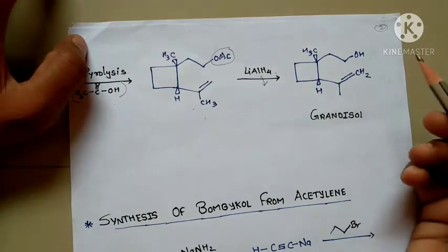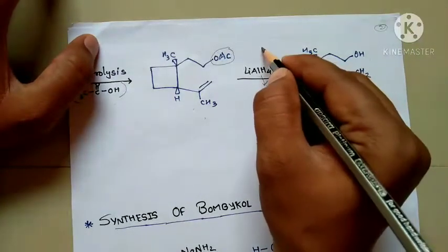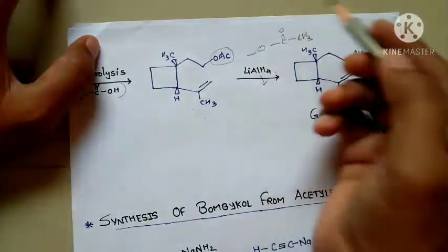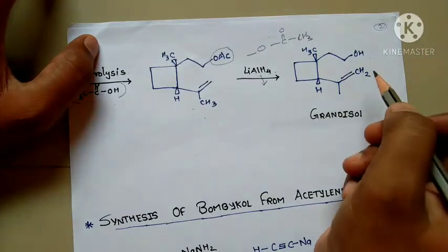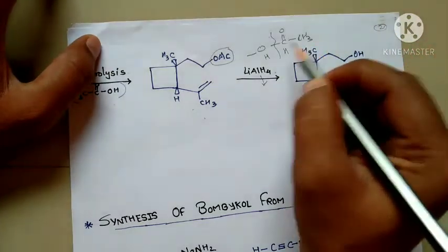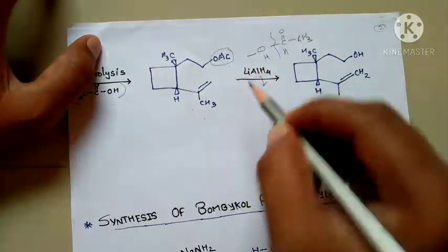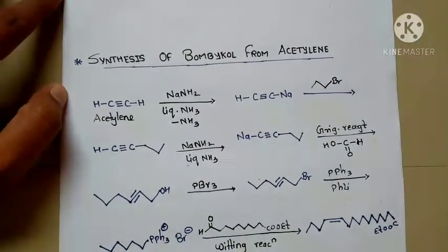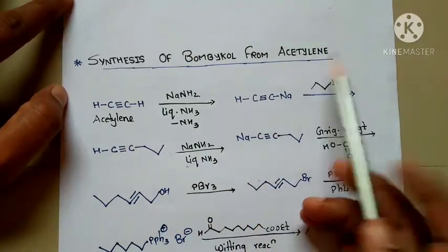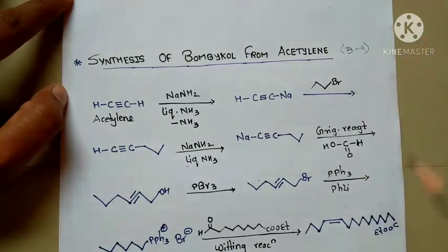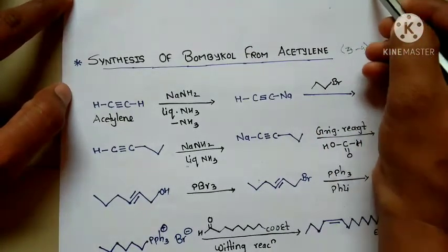How is the OAc bond reduced? Hydrogen is added across the oxygen-carbon linkage and you get OH instead of OAc. So that is your grandisol — that is your first synthesis. The next synthesis is the synthesis of bombycol from acetylene. This is very important and it is for three or four marks. The grandisol synthesis is also very important and is for four marks.